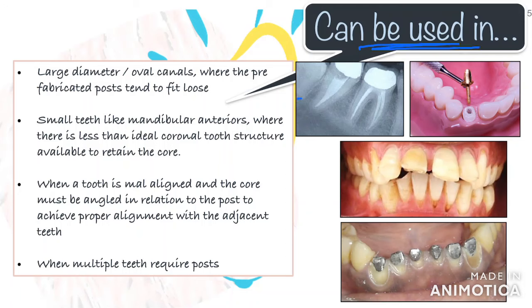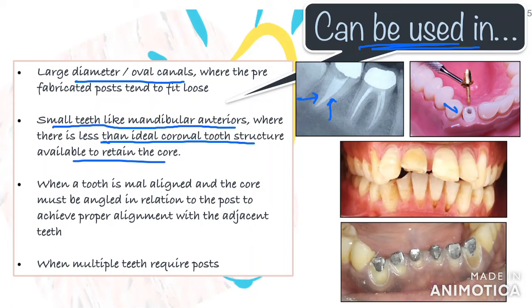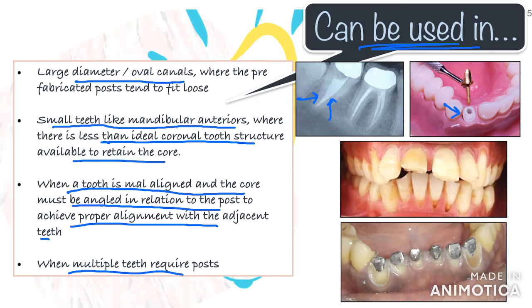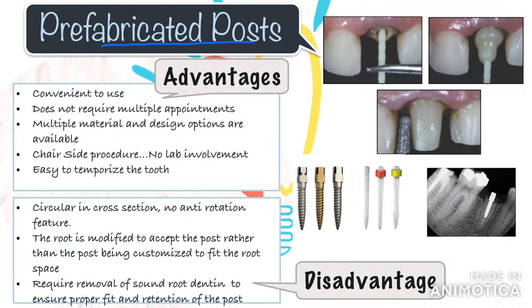Some cases where customized posts work better than prefabricated ones: large diameter or oval canals where prefabricated posts tend to fit loose — since these are customized, the post fits intimately into the canal space even if the canal is not round. It works well in small teeth like mandibular anteriors where there is less than ideal coronal tooth structure available. Custom made posts can also be used when a tooth is malaligned — the core is angled in relation to the post to achieve proper alignment. Another great use is when multiple teeth are involved: it is much easier to make an impression and get the post fabricated in the lab instead of individual build-ups.